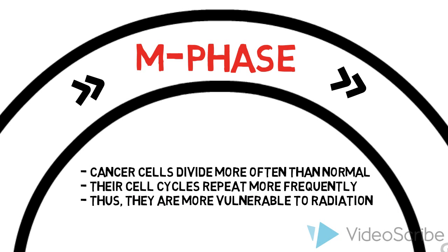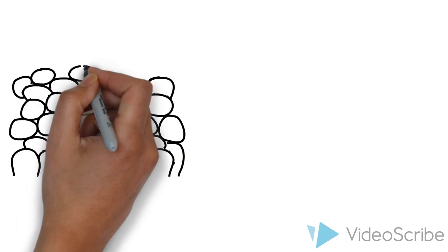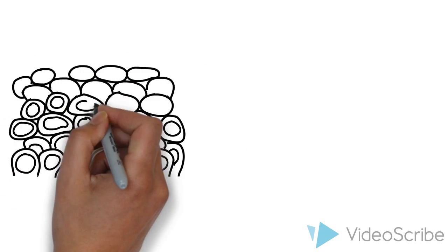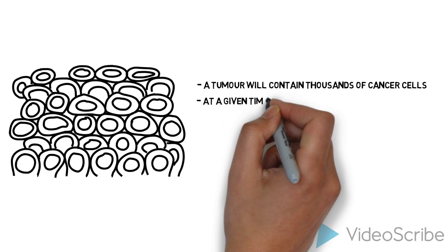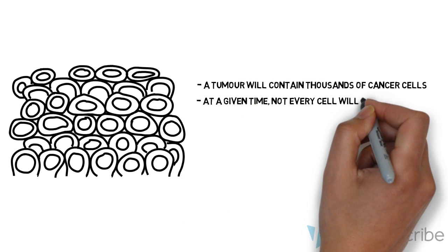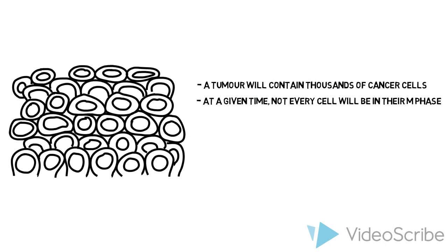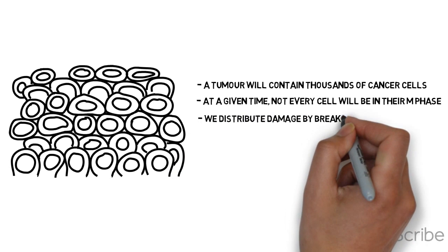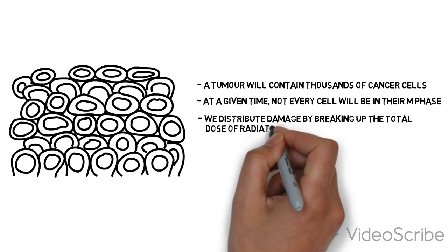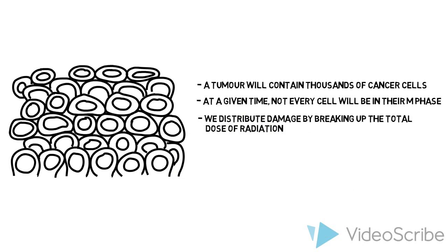Keep in mind, a tumor will contain thousands of cancer cells. If we gave a one-time giant dose of radiation, not every cell would be in its M phase, and therefore not equally affected. To distribute damage, we break up the total dose of radiation into smaller amounts given over multiple days. This is called fractionation. This increases the chance of radiation catching a cell in its M phase and causing adequate DNA damage.